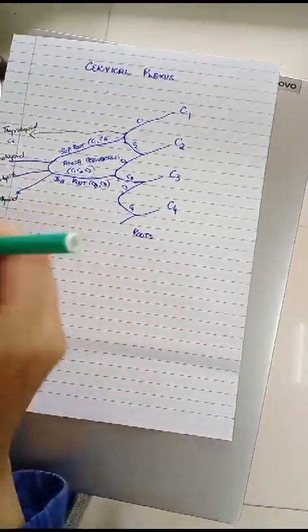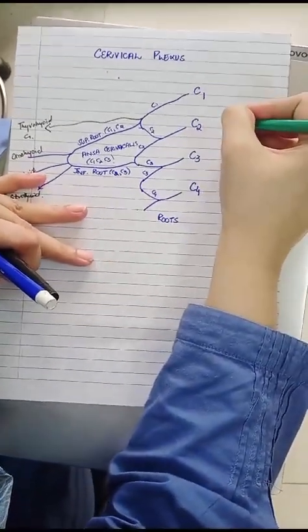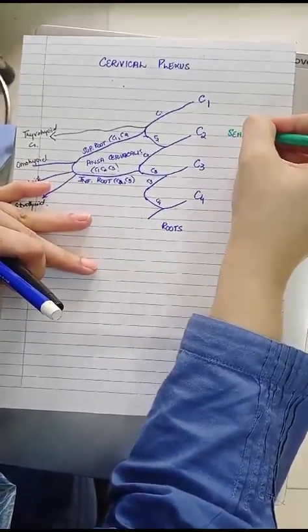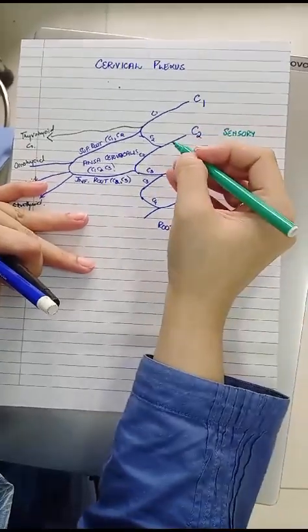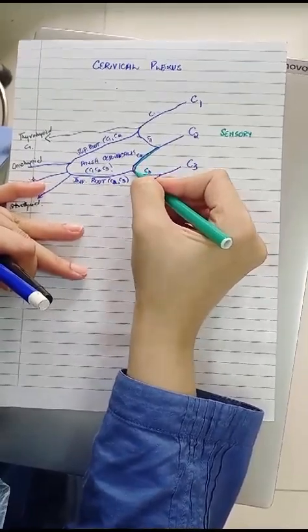Apart from that, the next question arises about the sensory distribution or the cutaneous branches of the cervical plexus. The main branches or the main loop which is responsible for this sensory is C2 to C3.